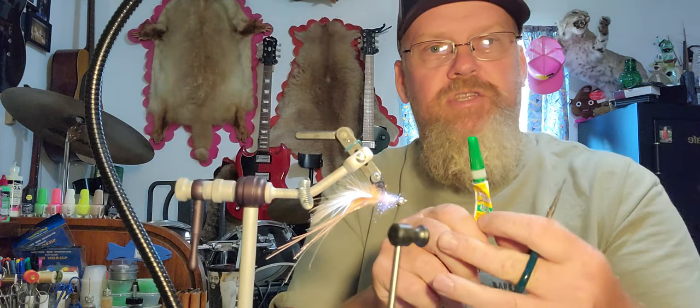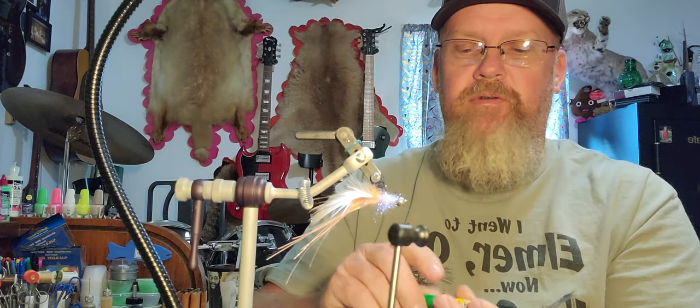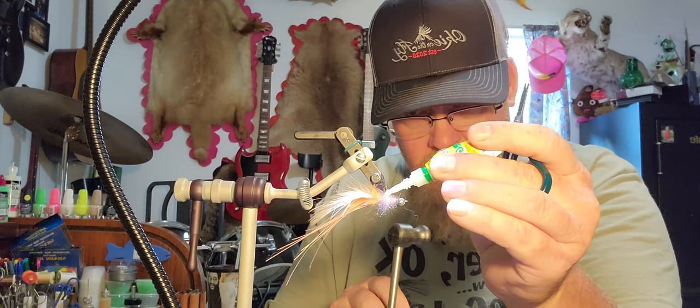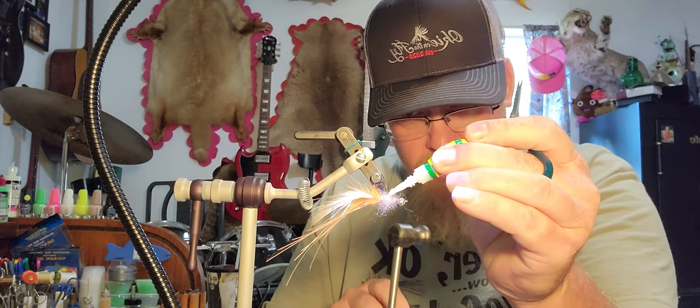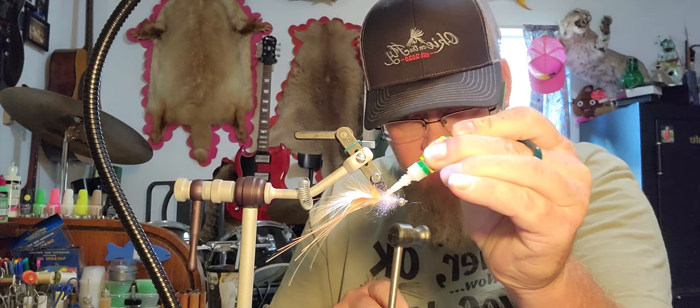Once I get to that point, the next thing I'm going to do, I always use a gel super glue. This gel super glue is hands down my favorite, it doesn't drip all over the place. Now I've got the hook turned with the dumbbells down on the bottom.